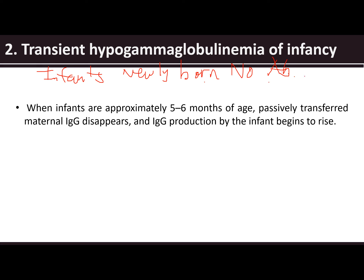In this type of disease, infants would have no antibody and they would get antibodies from the maternal source, transferred passively. Now the antibodies from the mother would disappear at around the age of five to six months, and from there the infant would start their own antibody production.